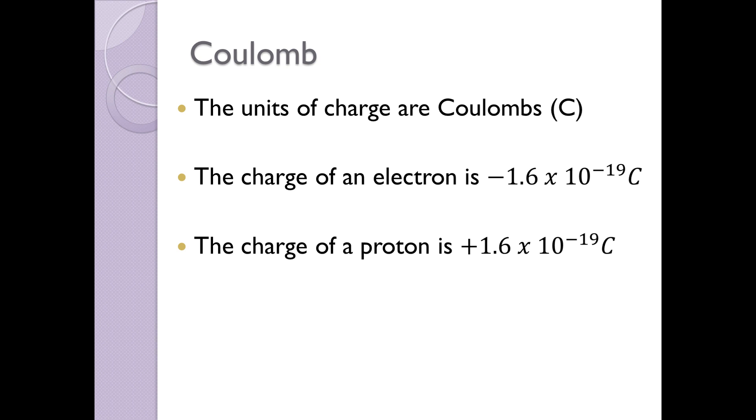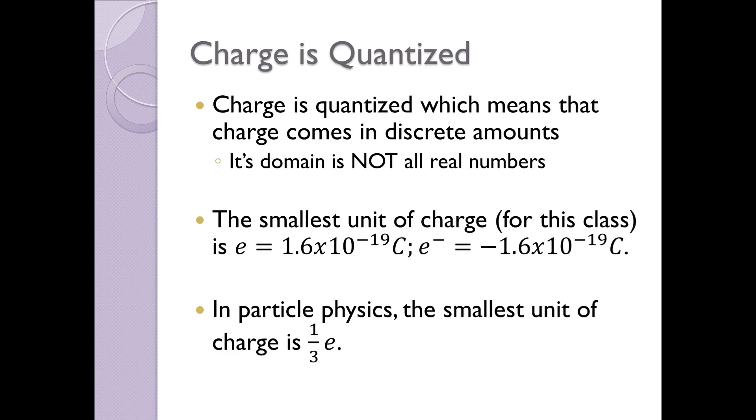And I talk about charge, and the units of charge are a unit called coulombs, represented by capital C. And the charge of an electron and the charge of a proton are similar, except the electron happens to be negative and the proton happens to be positive. Positive 1.6 times 10 to the minus 19, or minus 1.6 times 10 to the minus 19. For this class, that's the smallest unit of charge that we're going to be working with.